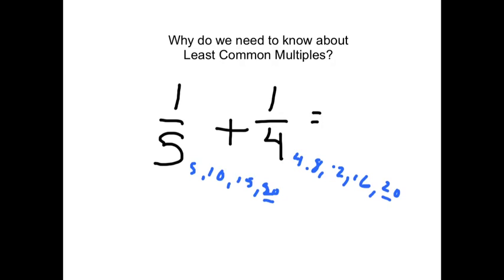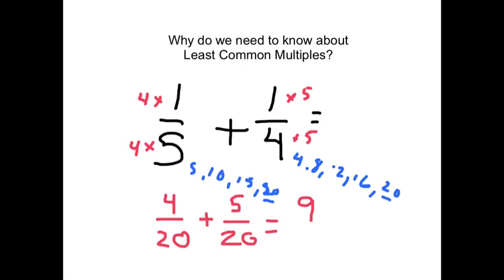So, if I change these two fractions so that they both have the same denominator of 20, I will be able to add them. 5 times 4 is 20. If I do it to the bottom, I do it to the top, so that's going to also change to a 4. 4 times 5 makes 20, which means I've got to multiply this by a 5. That means that this is a 5. So, when I add these two fractions, the answer is going to be 9 out of 20. That's why we need to know about least common multiples.